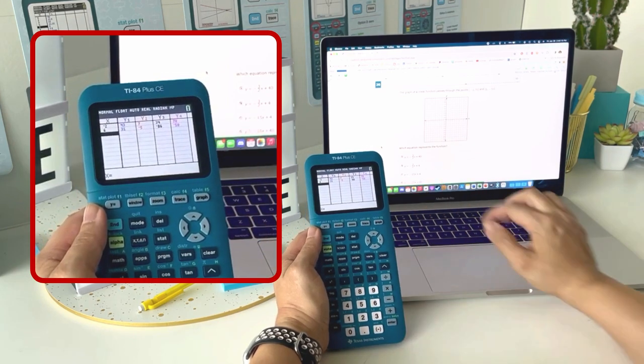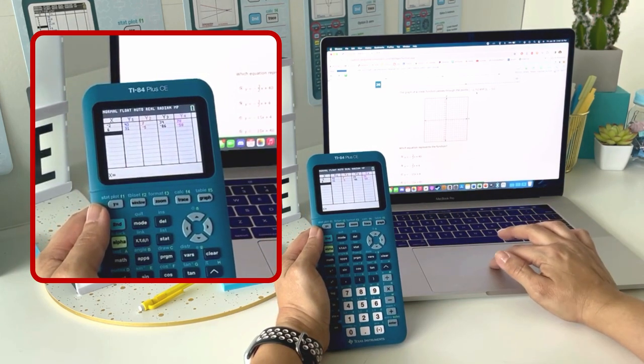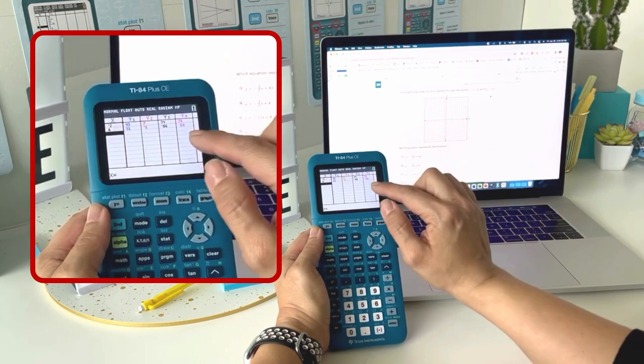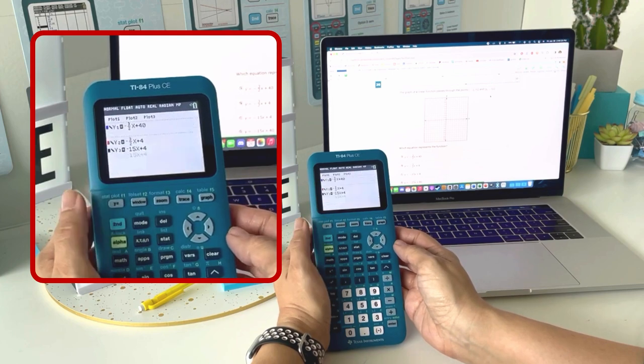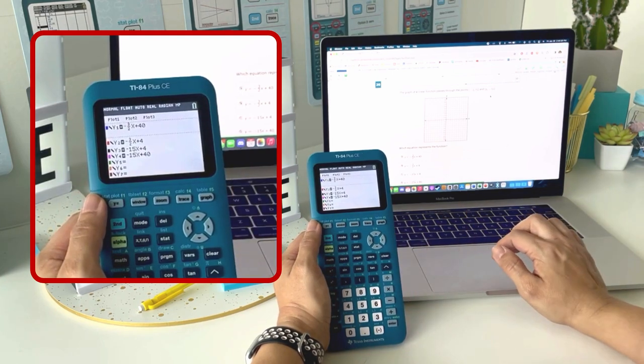Notice that the two Y coordinates, 70 and negative 50, show up in Y4. So that means the equation of the line that goes through these points is negative 15X plus 40.